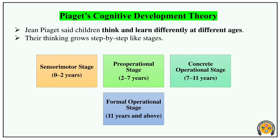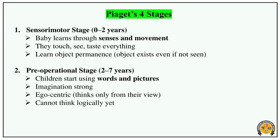The next theory is Piaget's Cognitive Development Theory. It is very important and easy. Piaget's theory describes how cognitive ability develops through stages. The first stage is the Sensorimotor stage — it is called sensory and motor skills.